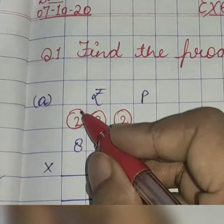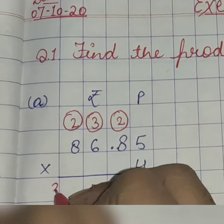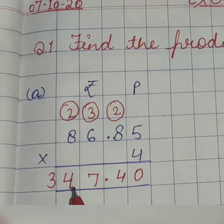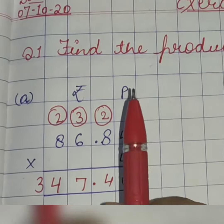4, 8's are 32. 32 plus 2, 34. Write as it is 34. So, this is 347 rupees and 40 paise.